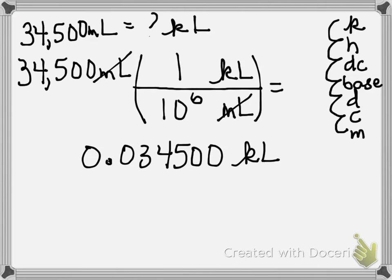In terms of significant figures, I shouldn't have those trailing zeros because in this number I only have three significant digits, so I only want three significant digits in my answer.